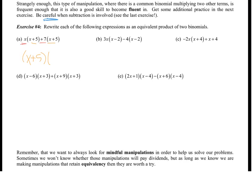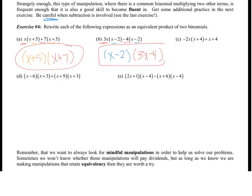Then we see what else is there: there's an X and a plus 7, so X plus 7 is your second binomial. For the next one, X minus 2 is the same, and what's left over is 3X and negative 4, so 3X minus 4 is your second binomial. For the third one, X plus 4 is the same, and there's an understood times 1, giving negative 2X and positive 1 as the second binomial.